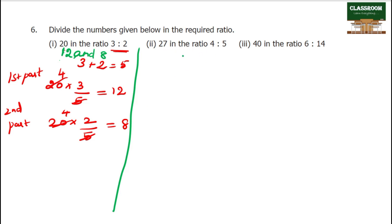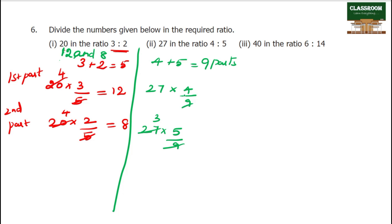Next question: 4 plus 9 is 9 parts. First part: 27 into 4 by 9. Second part: 27 into 5 by 9. 9 threes are 27 — first number: 4 threes are 12, 5 threes are 15. Answer: 12 and 15.